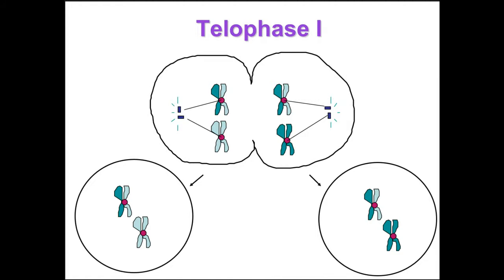In telophase one and cytokinesis one, each half of the cell has a diploid set of chromosomes, and each chromosome still consists of two sister chromatids. Cytokinesis usually occurs simultaneously, forming two haploid daughter cells. In animal cells a cleavage furrow forms; in plant cells a cell plate forms. No chromosome replication occurs between the end of meiosis one and the beginning of meiosis two because the chromosomes have already replicated.